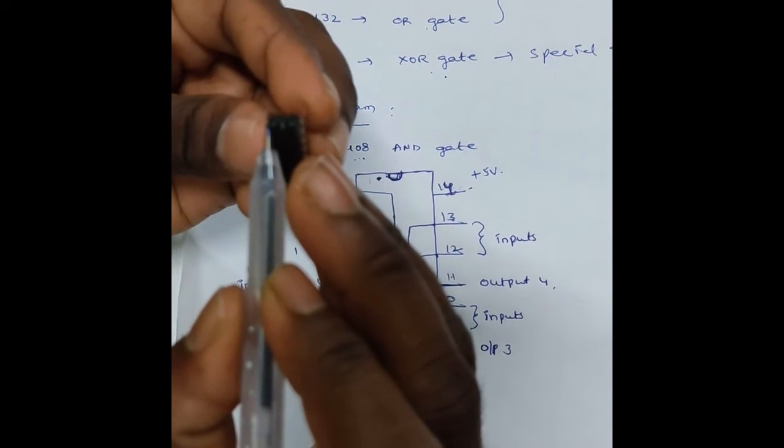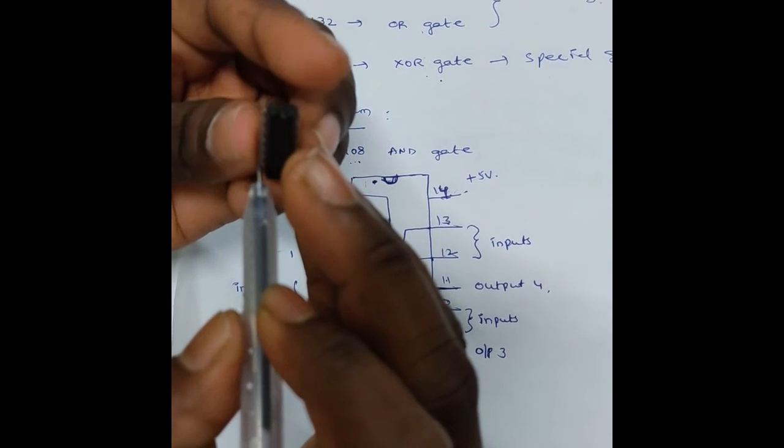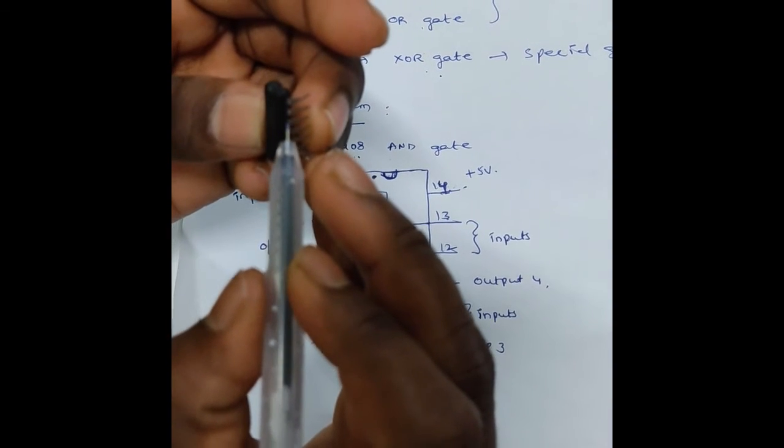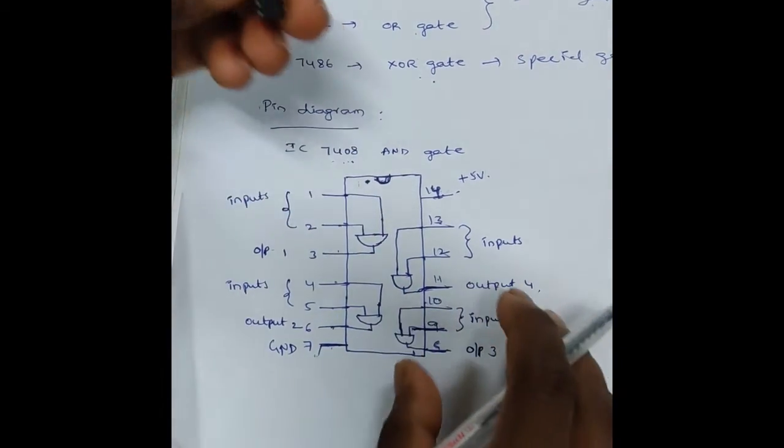Starting from 1, 2, 3, 4, 5, 6, 7, then 8, 9, 10, 11, 12, 13, 14. This IC contains 14 pins.